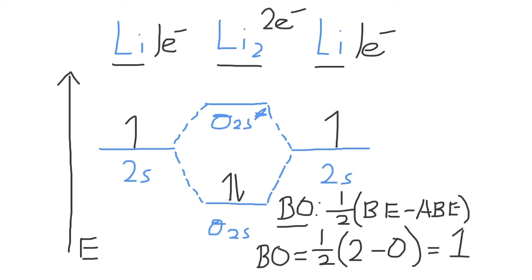A bond order of one corresponds to one electron pair involved in a bond between the lithium atoms, which means that two electrons are involved in this bond.